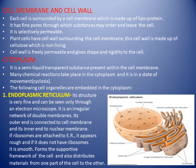Each cell is surrounded by a cell membrane made up of lipoprotein — lipids (fats) and proteins. It has fine pores through which substances may enter and leave the cell. It is selectively permeable: it selects what goes in and what comes out, permitting the movement of specific substances.